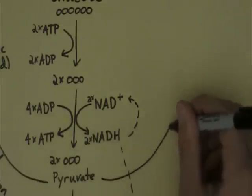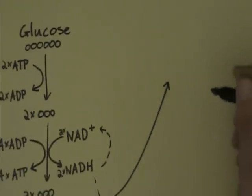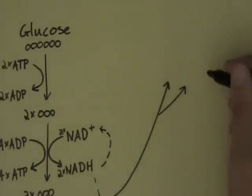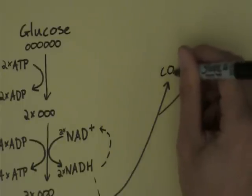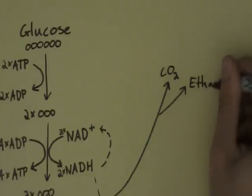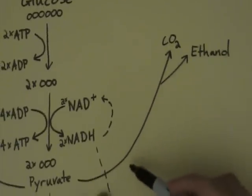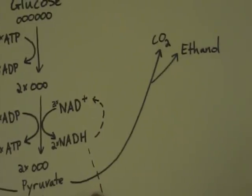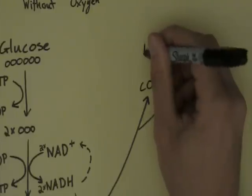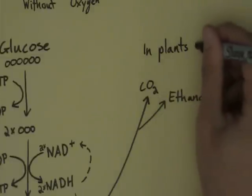In plants and fungi, they take a different approach. They produce not one compound but two: they produce carbon dioxide and ethanol. Ethanol is a form of alcohol, and we use this process to produce alcoholic drinks. Remember, this is done by plants and fungi.